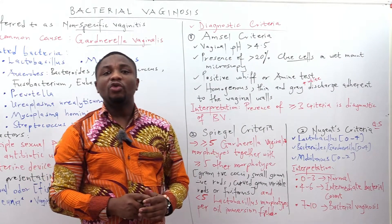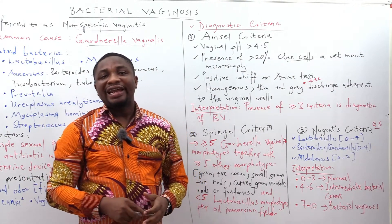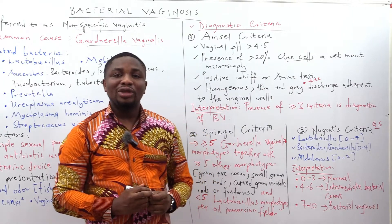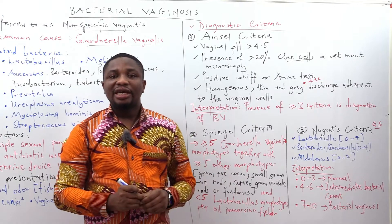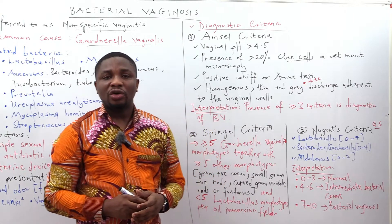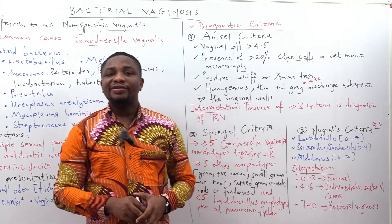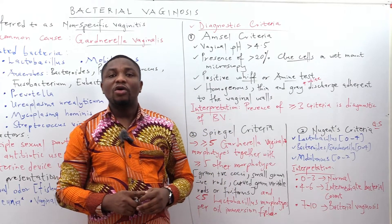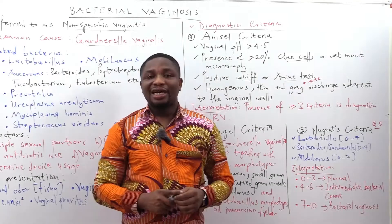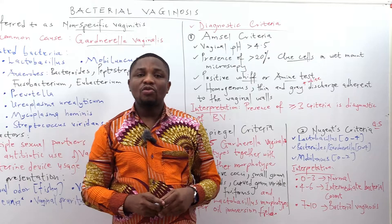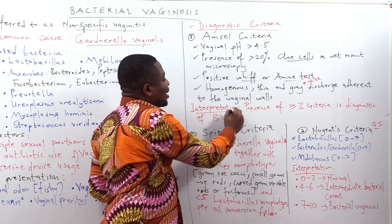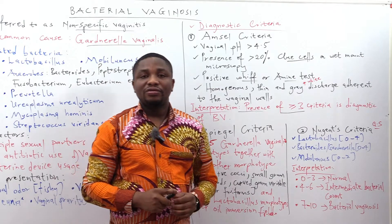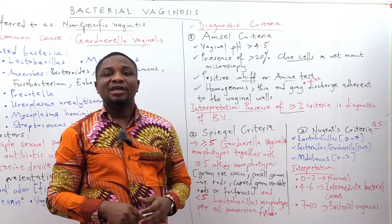The third component is a positive whiff or amine test, achieved by adding 10% potassium hydroxide to the vaginal discharge — upon addition, a fishy odor is produced. The fourth component is a homogeneous, thin, grey or white discharge adherent to the vaginal walls. For interpretation, the presence of at least three of these four criteria is diagnostic of bacterial vaginosis.